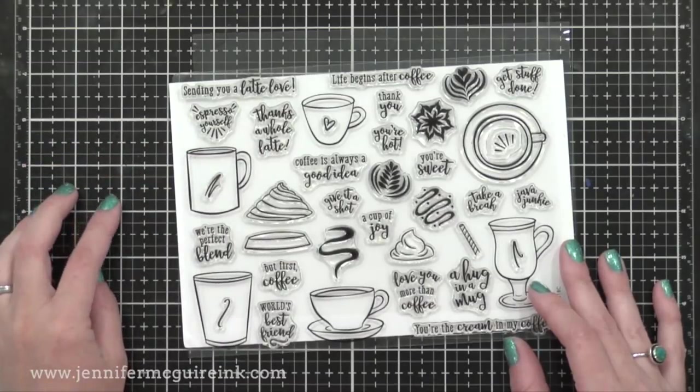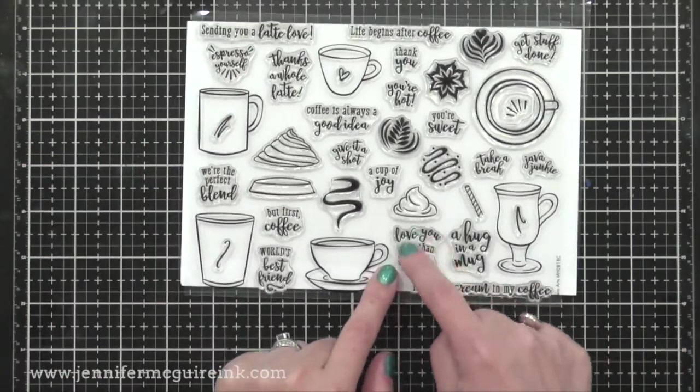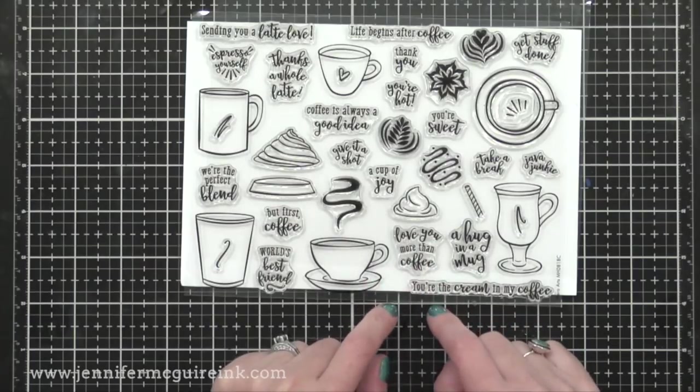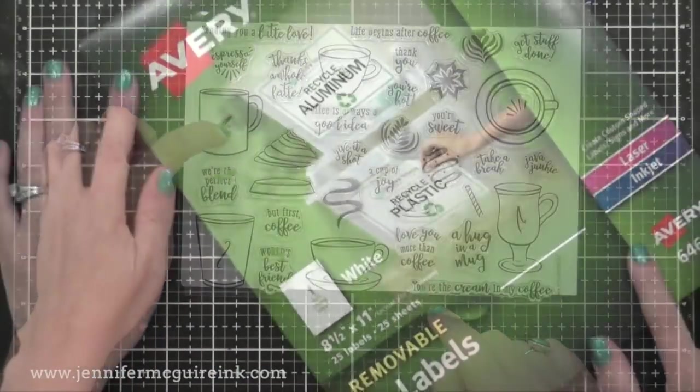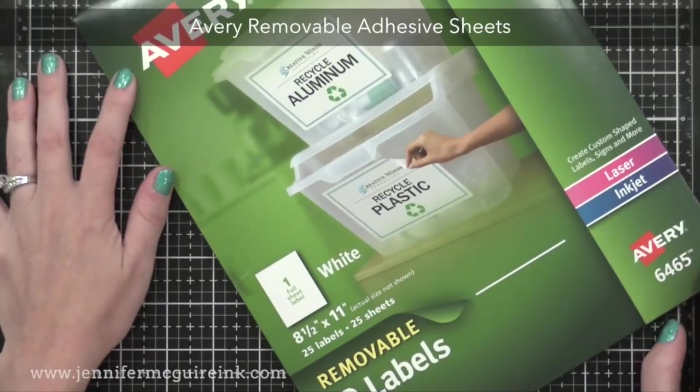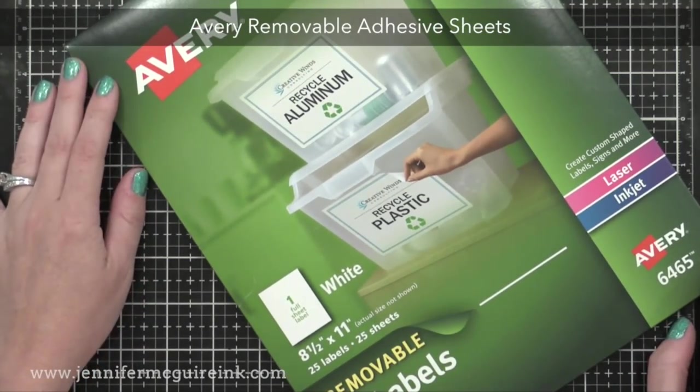Now, because these mugs are plain, so you can add anything you want to them, I'm going to use Creative Masking to decorate the mugs to make them all look different. For my masking, I'm using Avery Removable Adhesive Sheets.